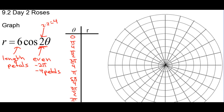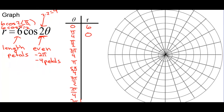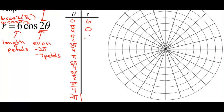Let's plug 0 in. We have cosine of 0 is 1, 1 times 6 is 6. And then when we plug pi over 4 in, we get 6 cosine of 2 times pi over 4. That's 6 times cosine of pi over 2, and cosine of pi over 2 is 0, so we get 0. There's going to be a pattern: it's going to go negative 6, 0, 6, 0, negative 6, 0, 6 when you count by pi over 4s with cosine of 2 theta.